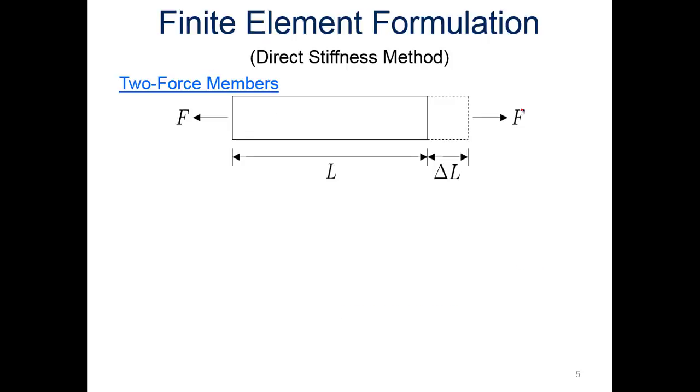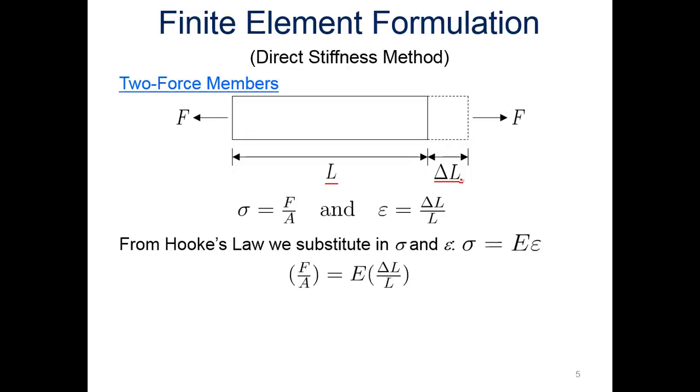The finite element formulation is looking at the direct stiffness method. We have a two-force member with a force being applied in either direction, going from an initial length L to a final length delta L. We can find the stress from the force over the area and the strain from the displaced length over the original length. From Hooke's Law, we relate the stress to the strain using the modulus. Substituting in, we get F over A equals the modulus times the change in length over the initial length.